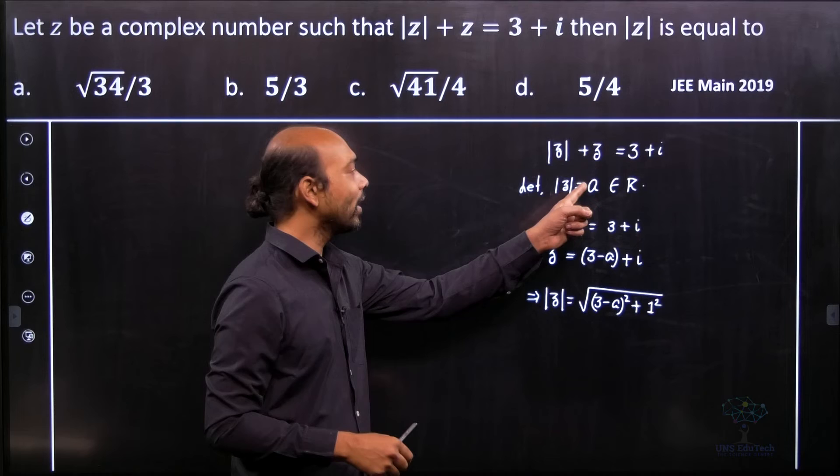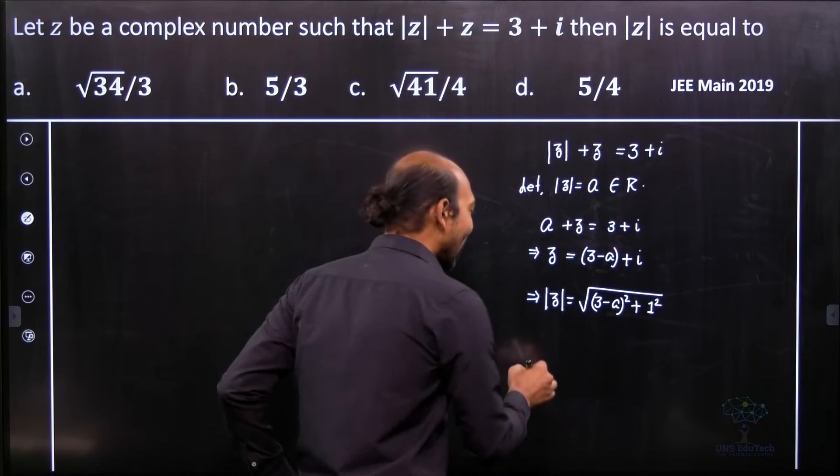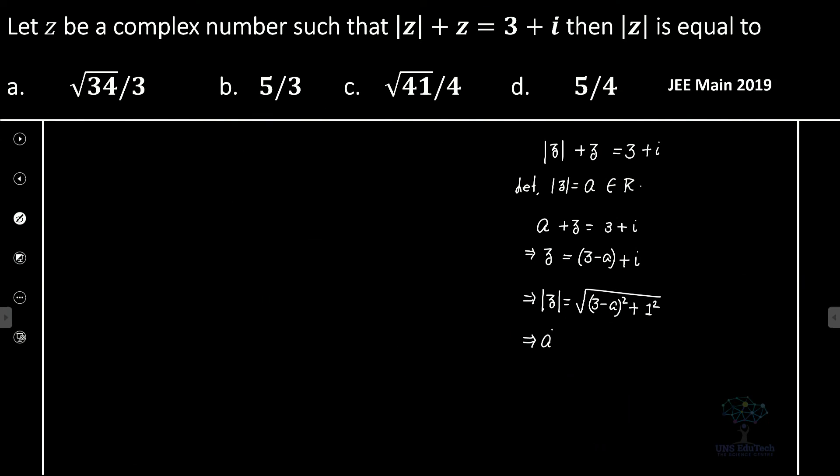Now what is mod z? We considered it as a. So directly we can write that a squared equals (3 minus a) whole square plus one.